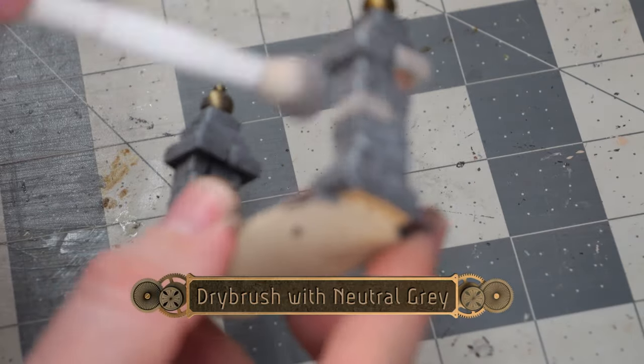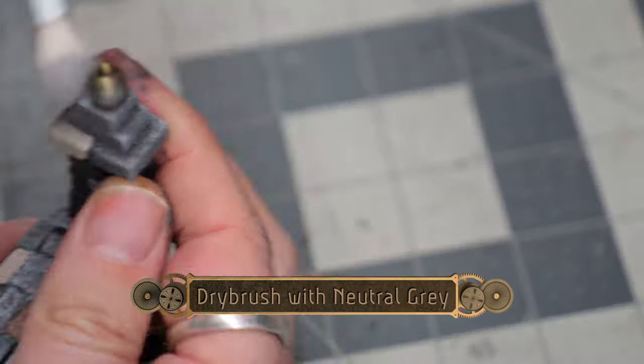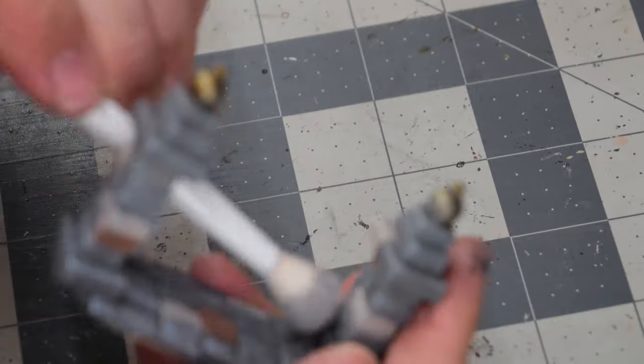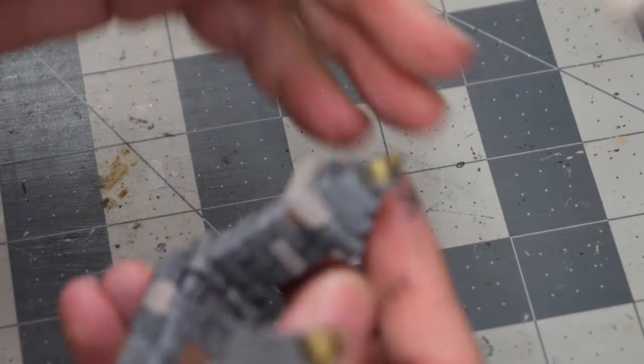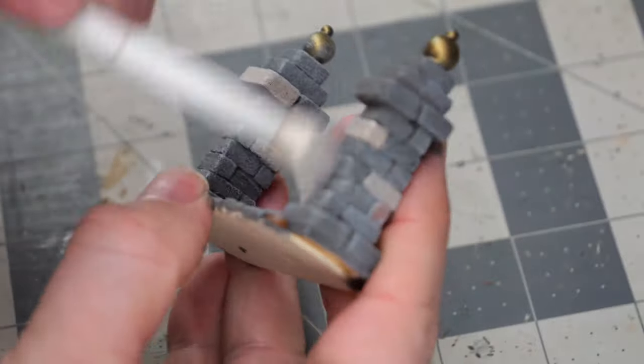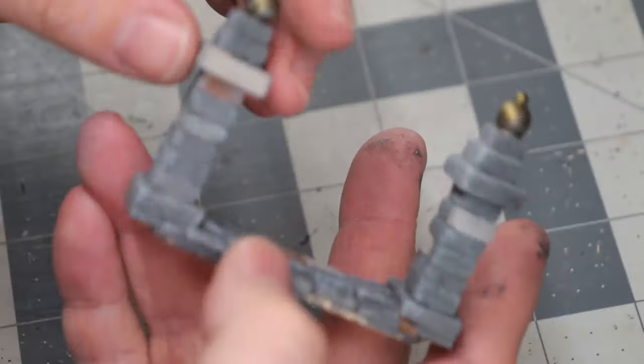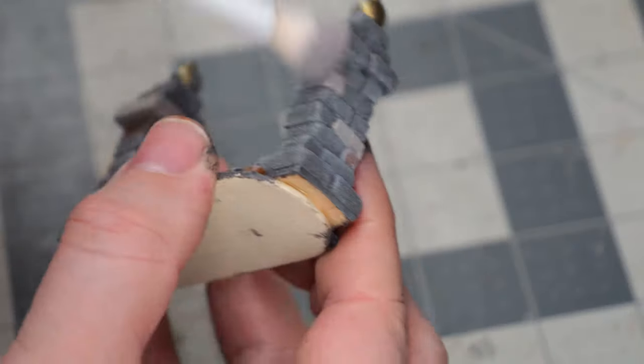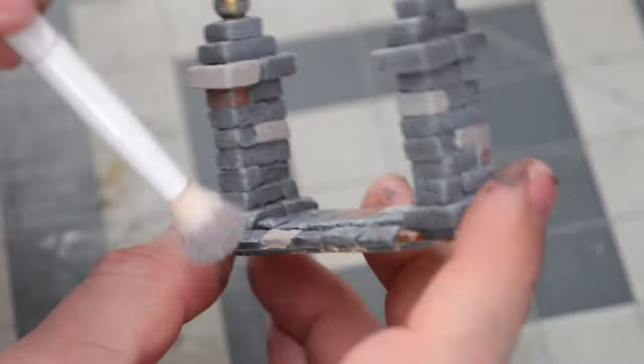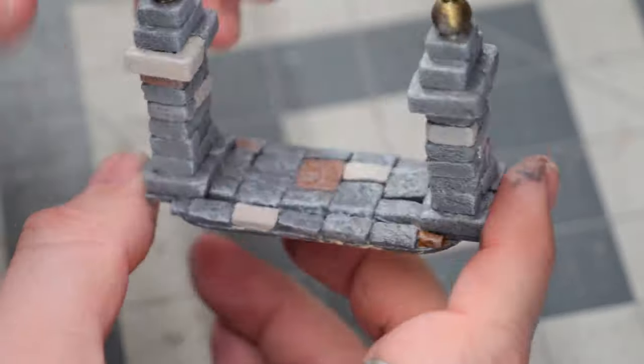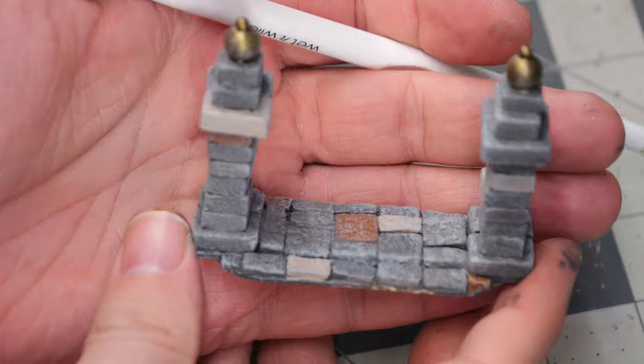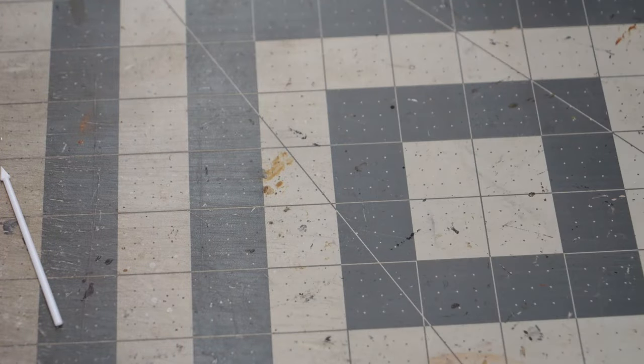Then I tied everything together with a dry brush of neutral gray. Sorry for the blurry camera—my autofocus has issues when I do dry brushing. Once that's done I'm really happy with it. Setting that aside, now it's time to make the actual gate.